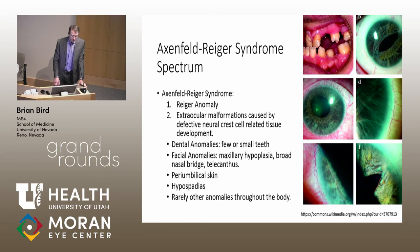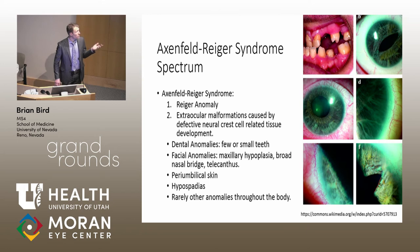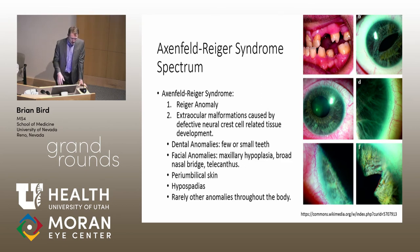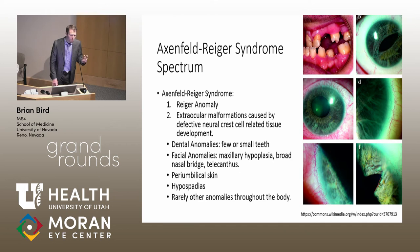Most commonly, these are maxillofacial abnormalities. In this image from a case study, that patient had only 23 teeth instead of the normal 32. One interesting finding I came across in my reading is that excess periumbilical skin is often misdiagnosed as a hernia or just an outie belly button — but it may actually be a more significant finding than that.